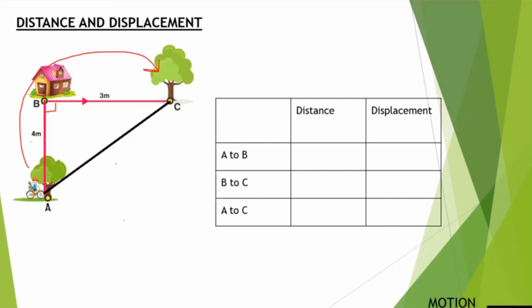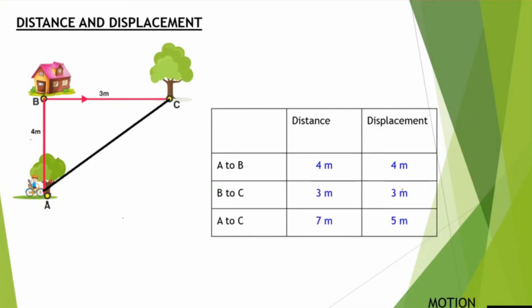For A to C in the clockwise direction, the distance is 4 plus 3, which is 7 meters. The displacement is the hypotenuse AC. Using the Pythagoras theorem: AB² + BC² = AC², which gives 16 plus 9 equals 25, and the square root of 25 is 5 meters. So the displacement for A to C is 5 meters.